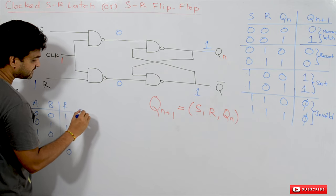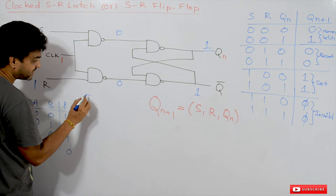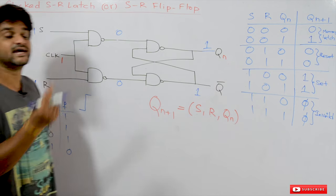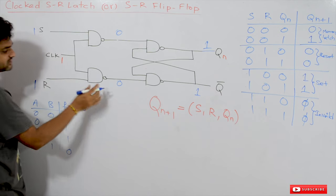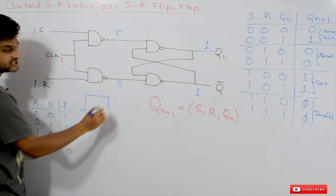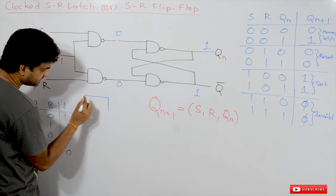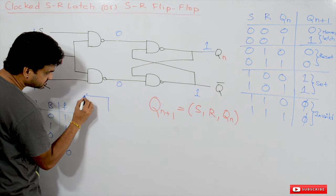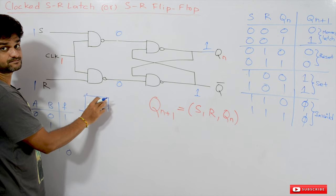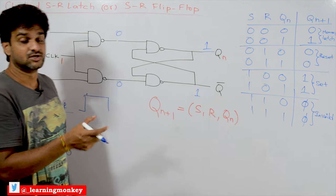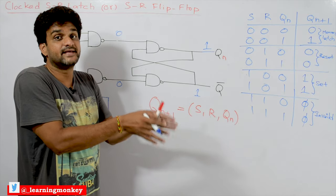We call it a flip-flop when the inputs are allowed into the circuit only at a specific transition — this is called an edge-triggered flip-flop. If the clock is edge-triggered, then only it is called a flip-flop. Edge-triggered means inputs are allowed only during the transition — positive edge means the transition from 0 to 1. So this is the time span where the inputs are allowed. After that, inputs will not be allowed even if the clock is 1. This is what we call an edge-triggered clock.